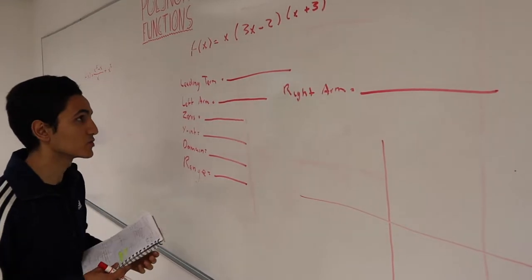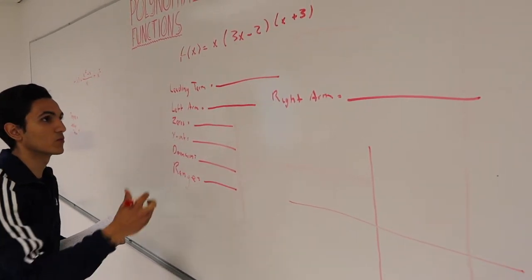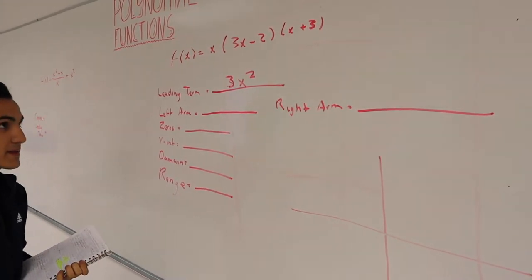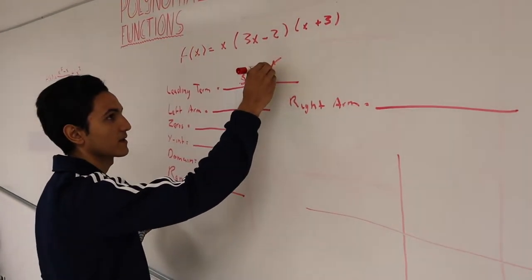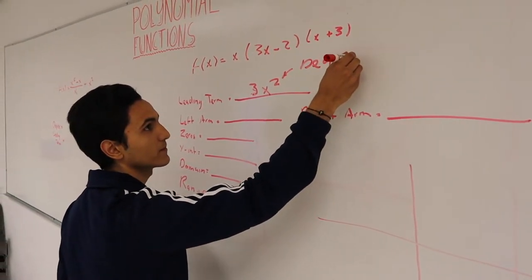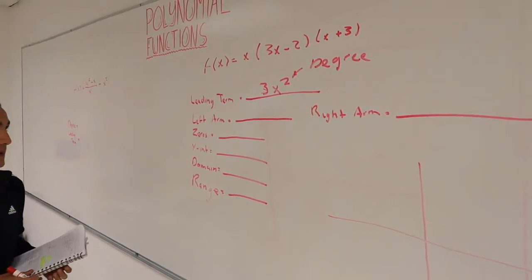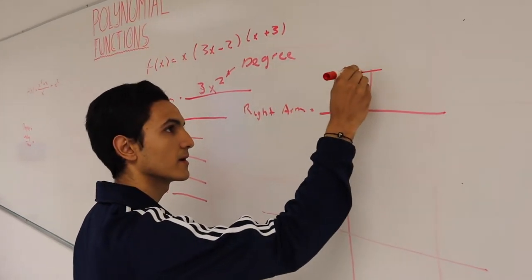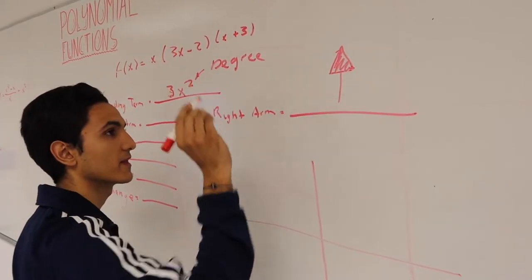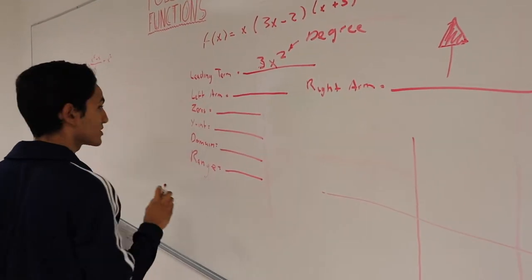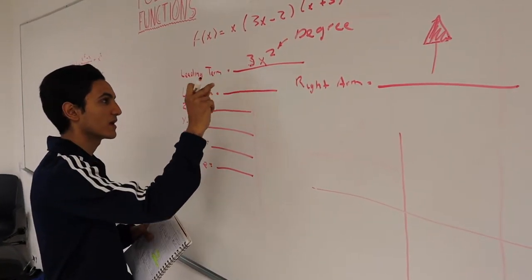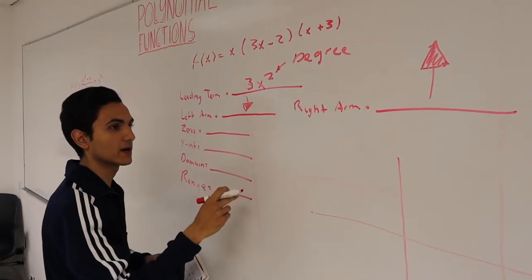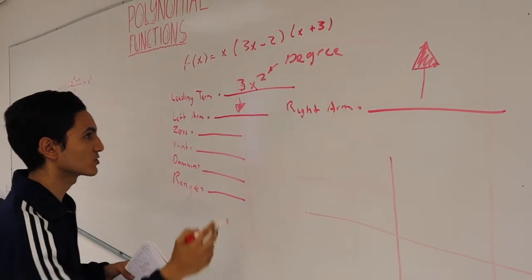If we simplify this, the leading term will be 3x cubed, and this will be the degree. The right arm will go up, since the sign of the leading term is positive. And since the degree is odd, as my partner Rubio explained with the rules, the left arm will do the opposite of the right arm — so it will go down.